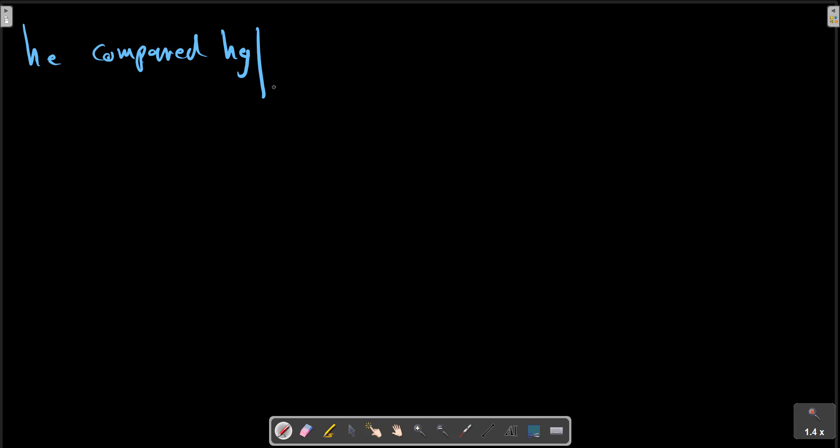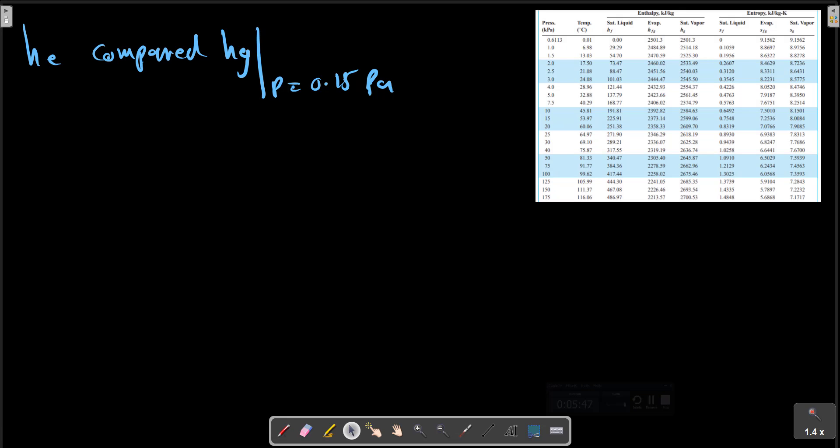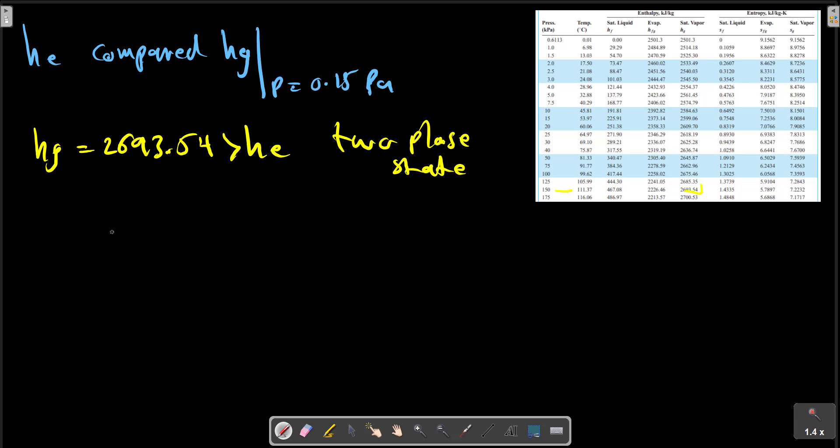So this h_e should be compared with h_g at pressure equals 0.15 MPa. For water, from the table at 150 kPa, we have h_g equals to 2693 kJ/kg. It's greater than h_e, so we have a two-phase state.